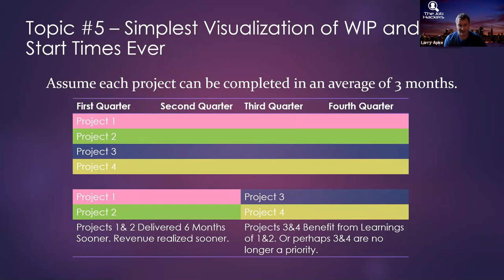Once you lock into starting those four projects, the sunk cost fallacy will keep you doing them even when you shouldn't be. Why? Because we had a big party at the start. Stop having parties at the start. Start having parties at the end.